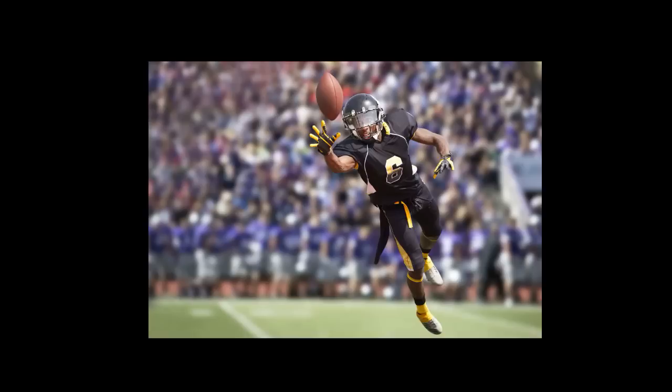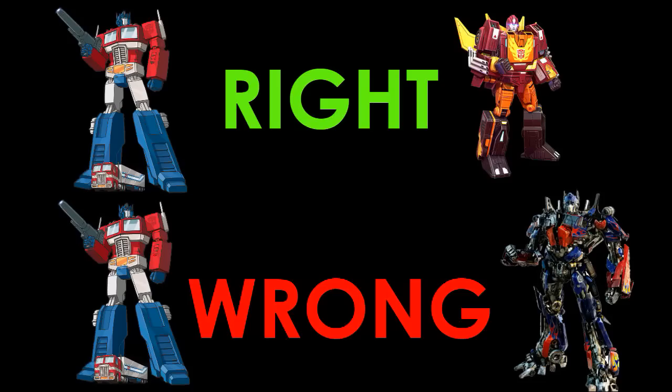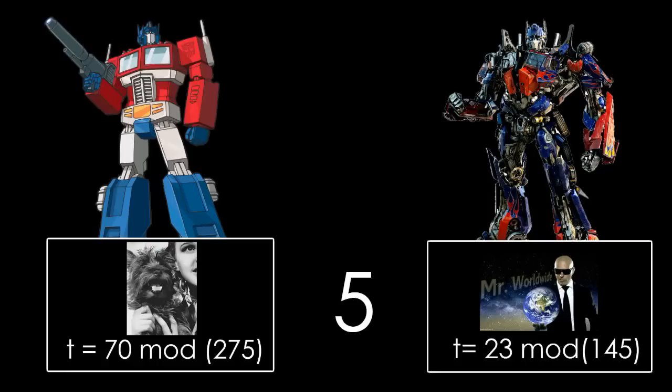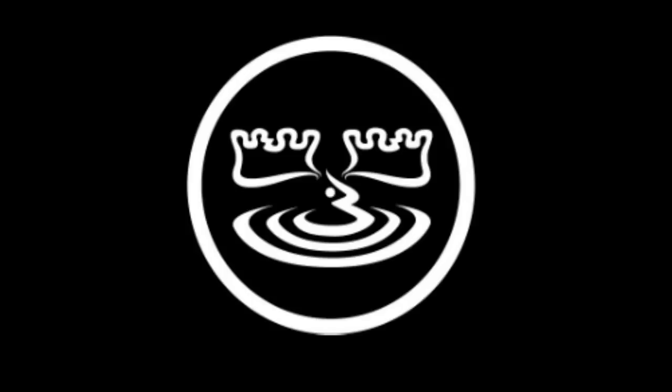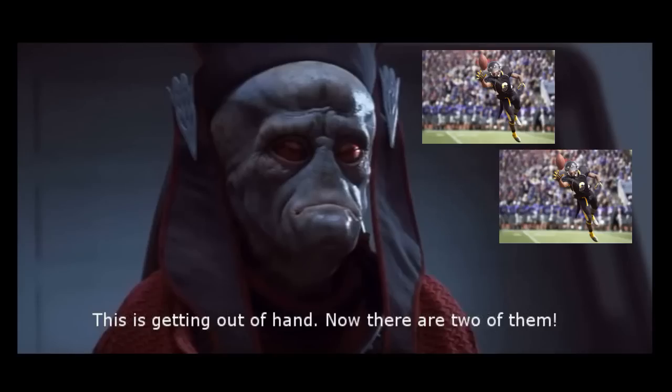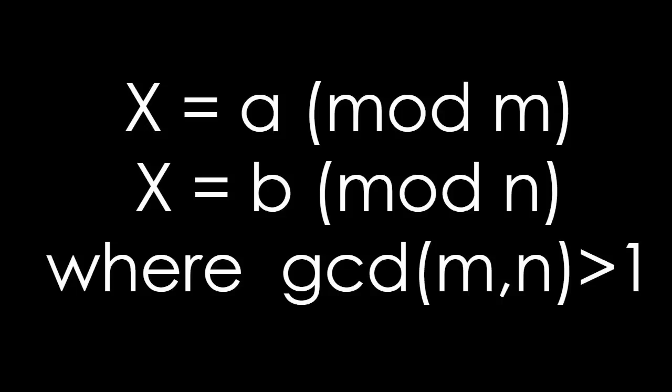But there is a catch. Each of the moduli have to be co-prime, meaning they have no prime factors in common. In this case, 145 and 275 both have a common factor of 5. Luckily, there is a generalization of the CRT for non-co-prime moduli, although there is another catch. For example, if x ≡ a mod m and x ≡ b mod n, with gcd(m, n) > 1, there is a solution if and only if a ≡ b mod gcd(m, n).